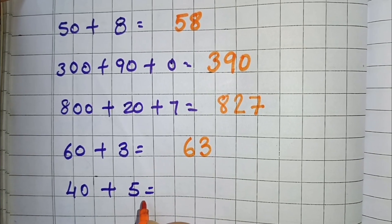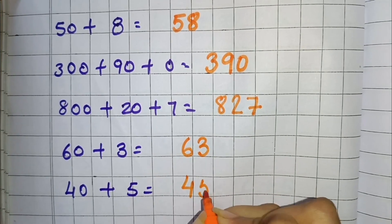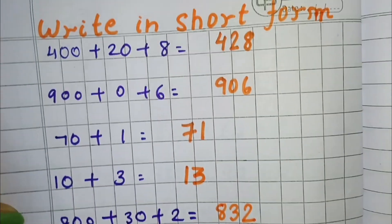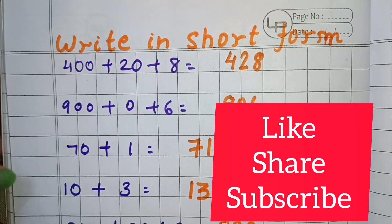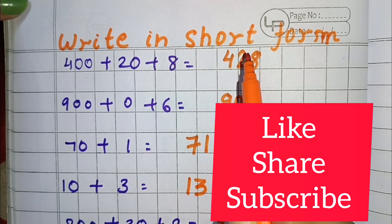Then at last we have 40 plus 5. You can write this in short form as 45. So this is all about today's class, children. In today's class we learned how to write these numbers in short form.